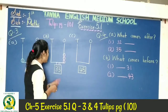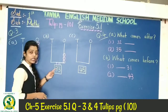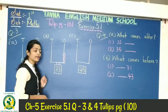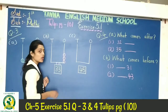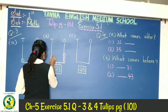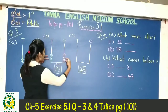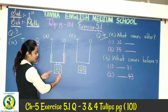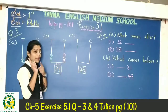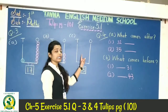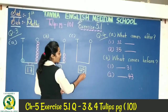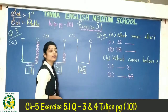Same for the tens place — the number is 3, so we draw 3 beads: 1, 2, and 3. So for 33 you draw 3 beads on each line. Next, part C: the number is 45.